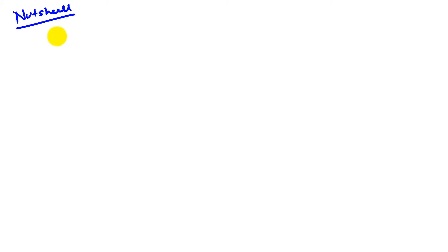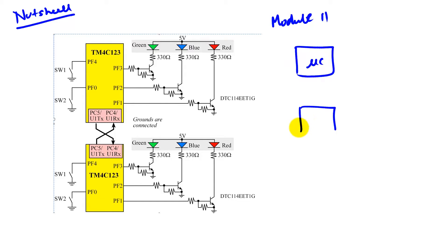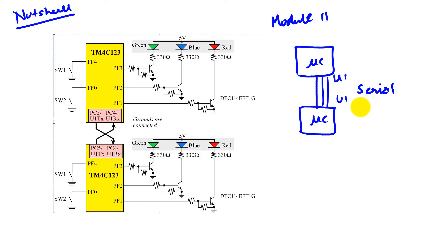First, let's take a look at where we were. In module 11 we saw how two microcontrollers can communicate with each other using UART, using serial communication. This was our chat room where we sent colors to each other in our offices. This is what is called point-to-point communication, because there are only two endpoints and they talk to each other.